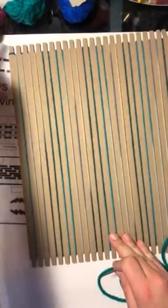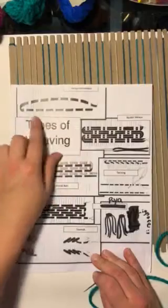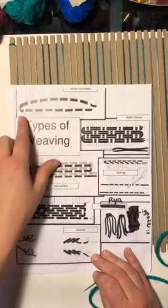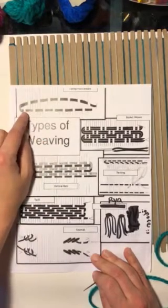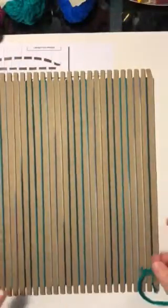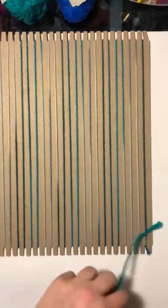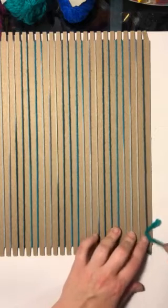For plain tabby weaving — which if you look on your types of weaving paper is number one, it says tabby plain weaving — all you're doing is going under one, over one, under one, over one. Then on your next row you have to go the opposite: if you went under, you need to go over; if you went over, you need to go under. This is the most simple one — if you struggle with art, this is the one you should go for.